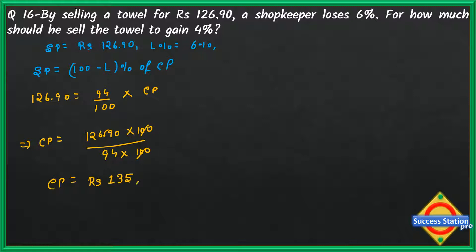Cost price is rupees 135. Now for the second part: for how much should he sell? We need to find selling price to gain 4%. Gain percent is given as 4%. As we discussed, cost price remains constant. Since gain is given now, instead of 100 minus loss percent we use 100 plus gain percent of CP. So selling price equals 100 plus 4 percent of cost price, that is 104 percent divided by 100 into cost price.